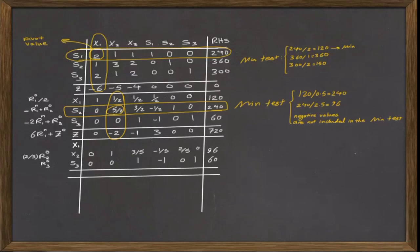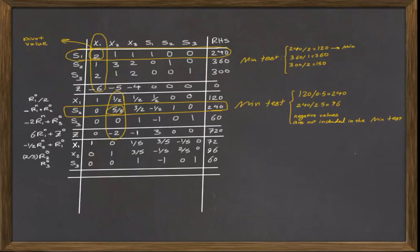However, to change the first element of the pivot column to a value of 0, we need to define an elementary row operation. If I multiply the new pivot row by negative 1 half and add it with the first row of the previous table, it gives me the value of 0 for the first element of the pivot column, and that's what we are interested in. So the elementary row operation will be negative 1 half multiplied by the second row of the new table plus the first row of the old table. By implementing this elementary row operation, this is the new value that we get for this row. Also, the elementary row operation to change negative 2 in the pivot column to a value of 0 is simply multiplying the new pivot row by 2 and adding it with the row of z. So this is the elementary row operation and by doing this, we get these new numbers.